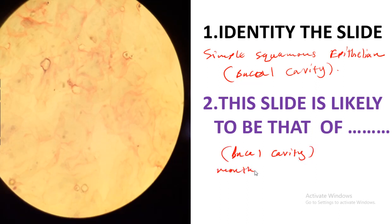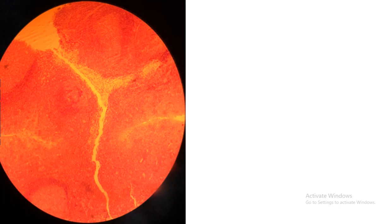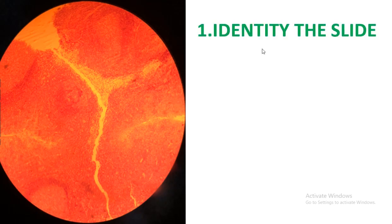I also need to make some labels, which will normally be explained in the next revision classes, as these videos are made for easy identification, reasoning, and hints. The next slide is a very important slide. When you identify this slide, this is just the palatine tonsil, which plays a role in the lymphatic system of a human being.